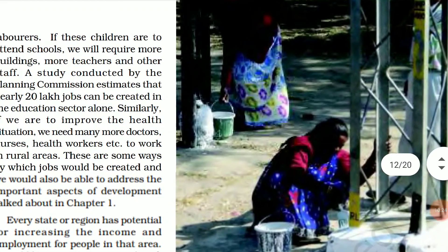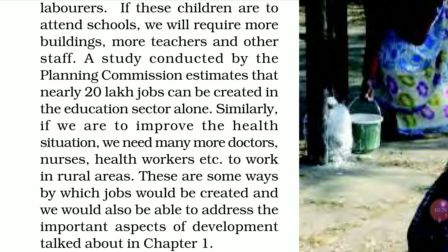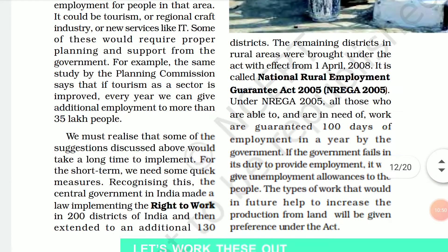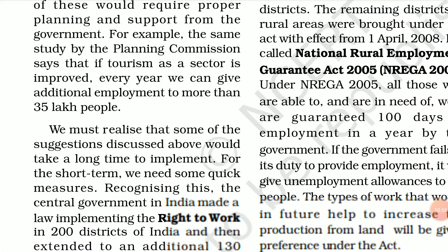Agar aap cold storage kholta hai, toh jab zarurat hogi, log apne seasonal crops ko, seasonal fruits ya vegetables ko cold storage mein rakh denge jab paise bahut kam milte hai, aur woh sell karenge jab bahut expensive ho. Jaise abhi season mein aap dekhenge, tomatoes 2 rupees, 3 rupees, 5 rupees kilo bikti hai. But now the price of tomato has risen to 40, 50, 60 rupees. So this is because now these people have cold storage — inke paas ab cold storage hai, jis se ye aaram se apni chizo ko store karke, jab bahut expensive hogi, tab woh sell karenge.